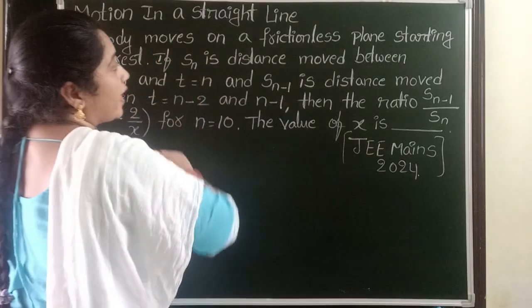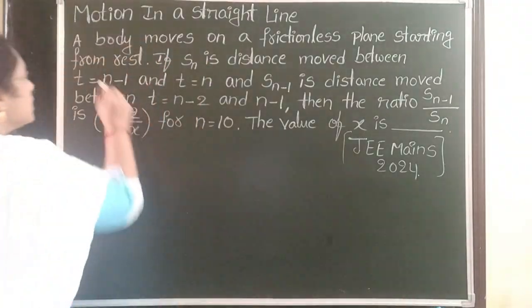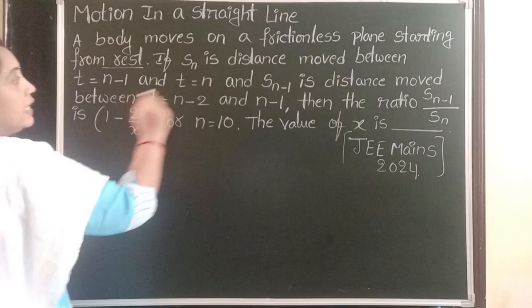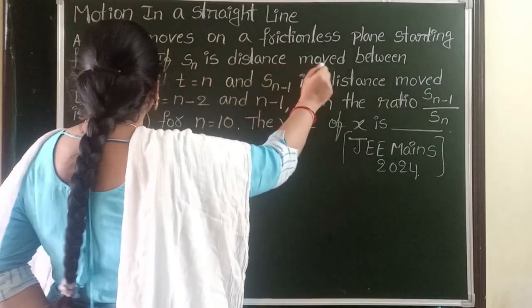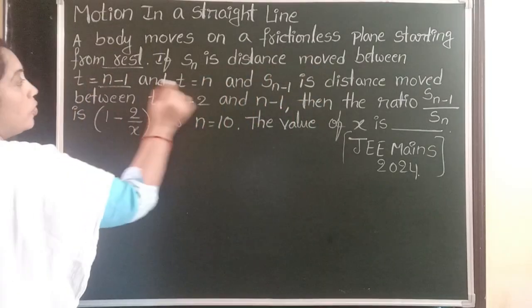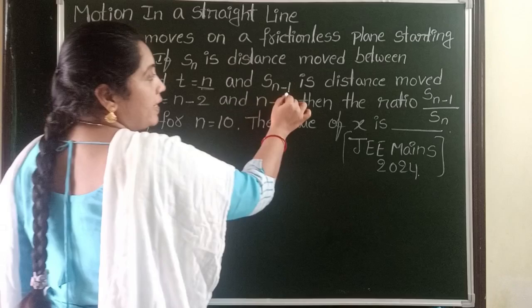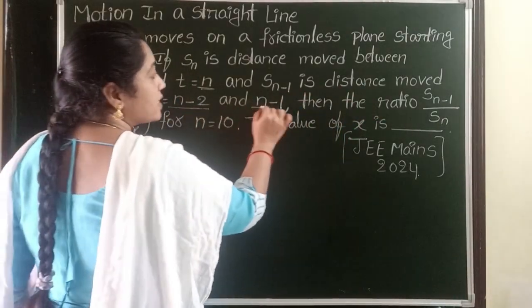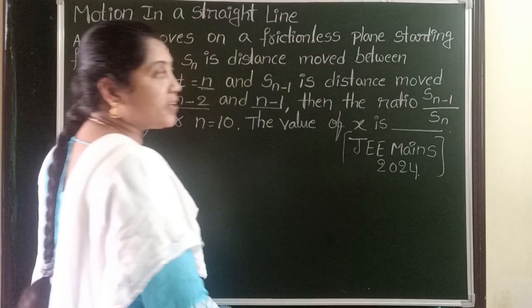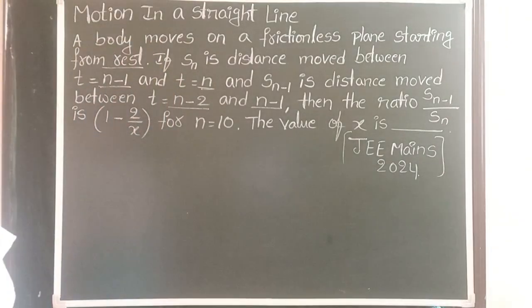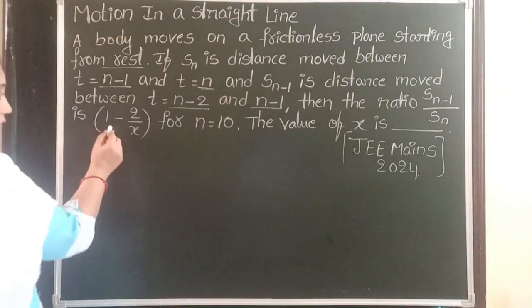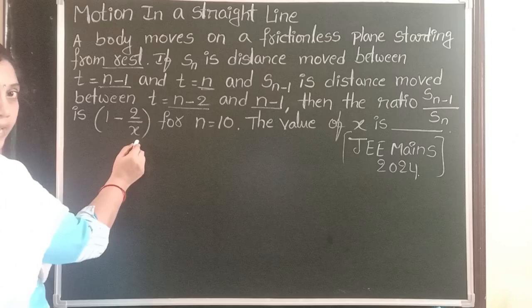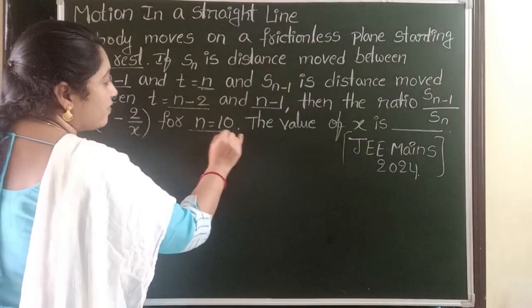A body moves on a frictionless plane starting from rest. Sn is the distance moved between t=n-1 to t=n, and Sn-1 is the distance moved between t=n-2 to t=n-1. Then the ratio of Sn-1 by Sn is. Here the given ratio is 1 minus 2 by X for the value n equals to 10.